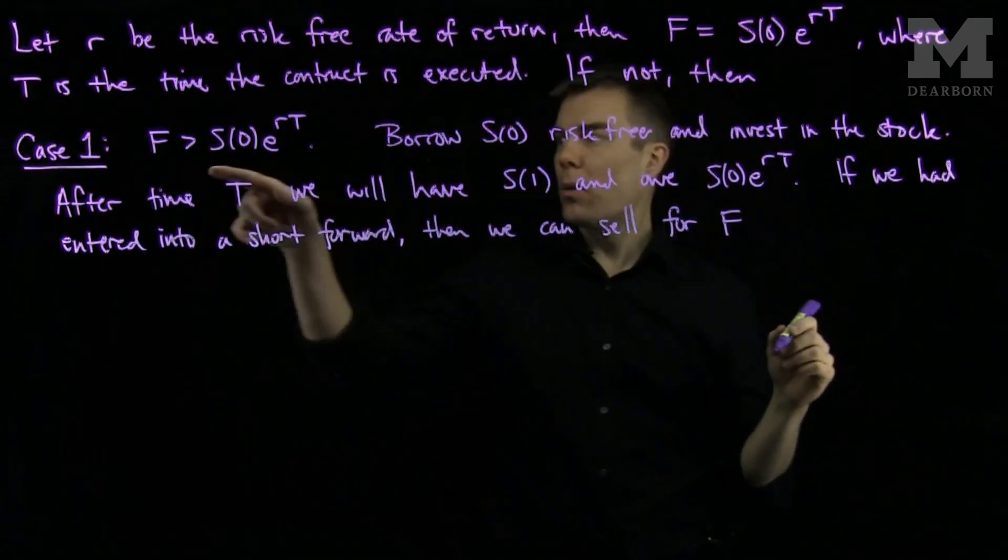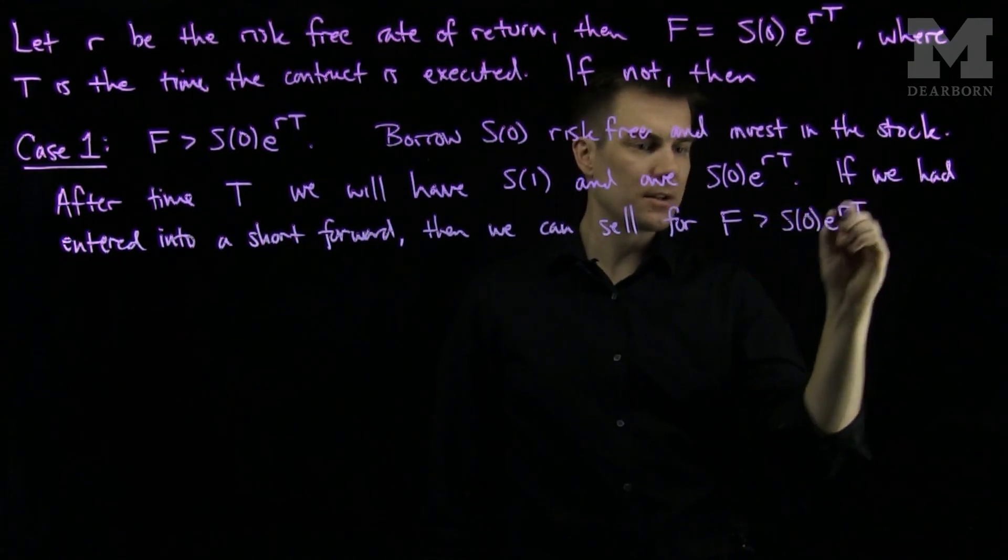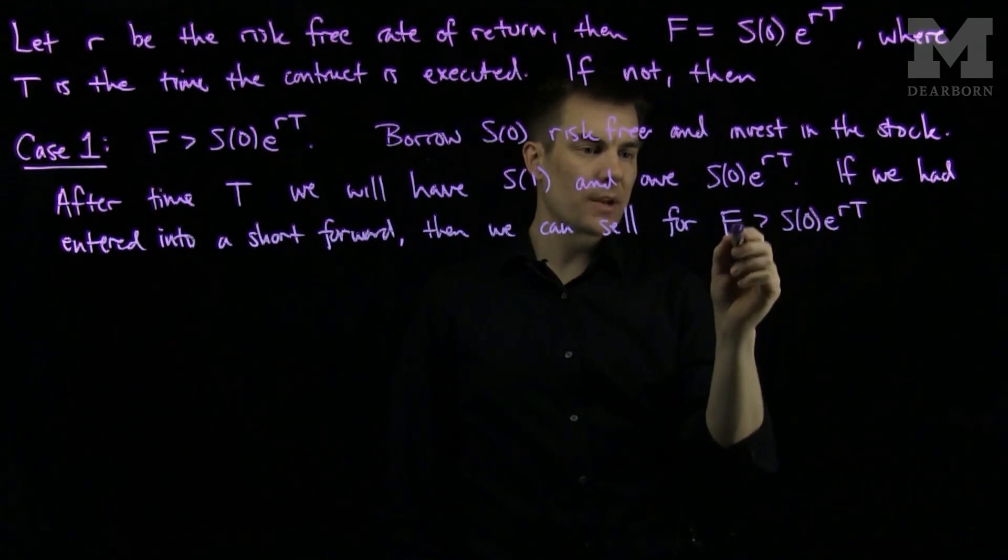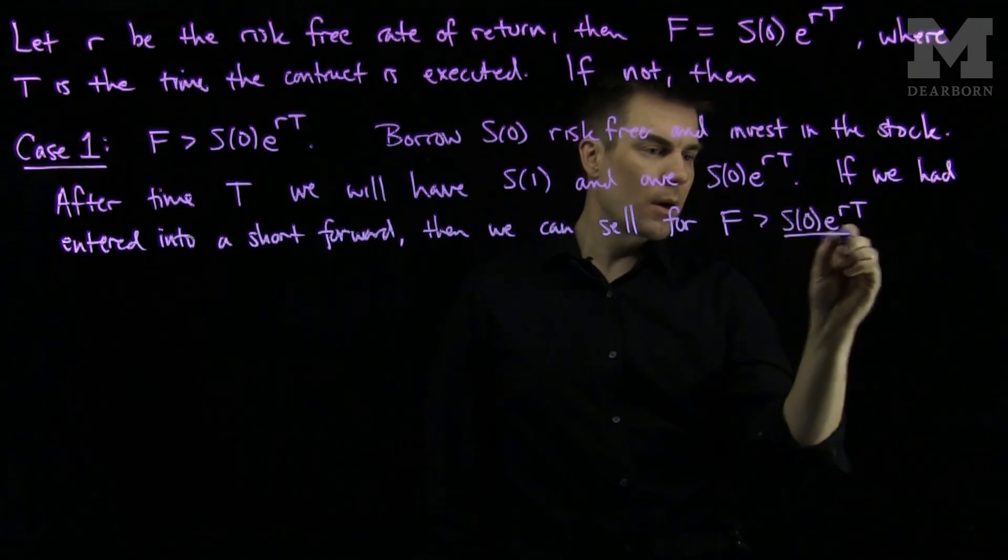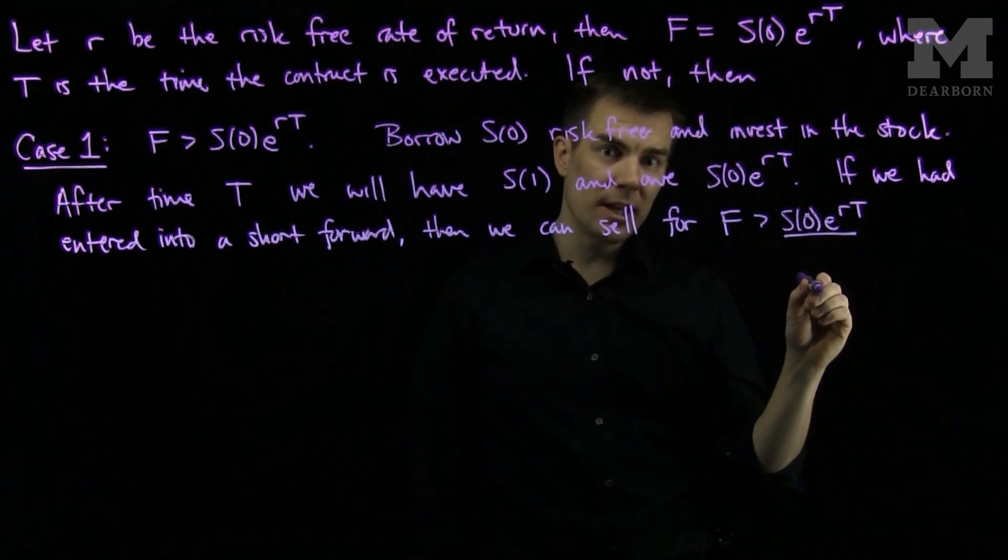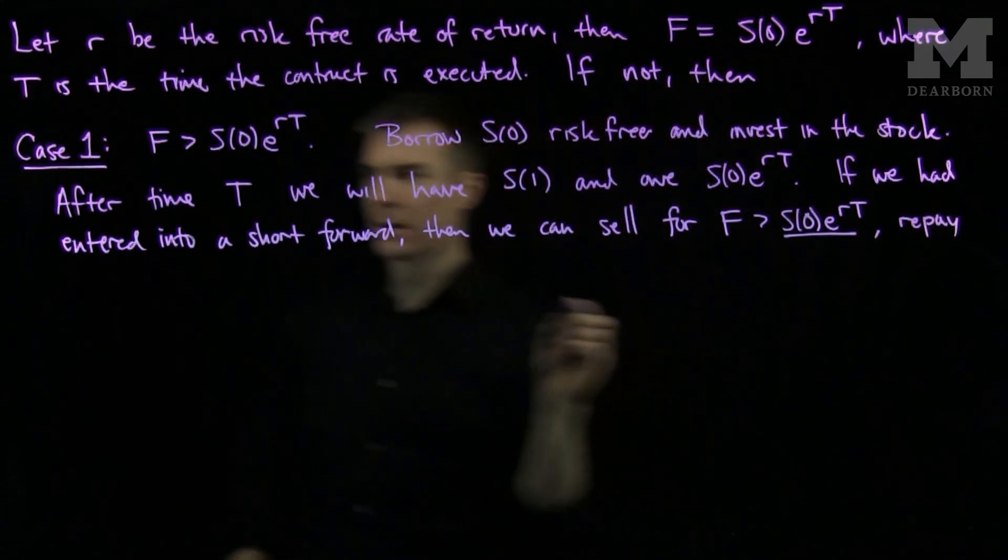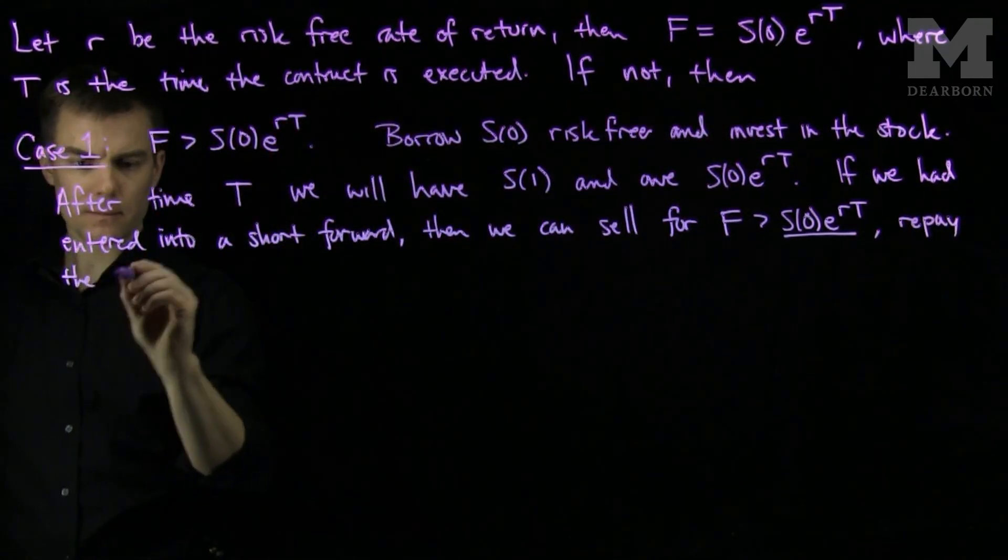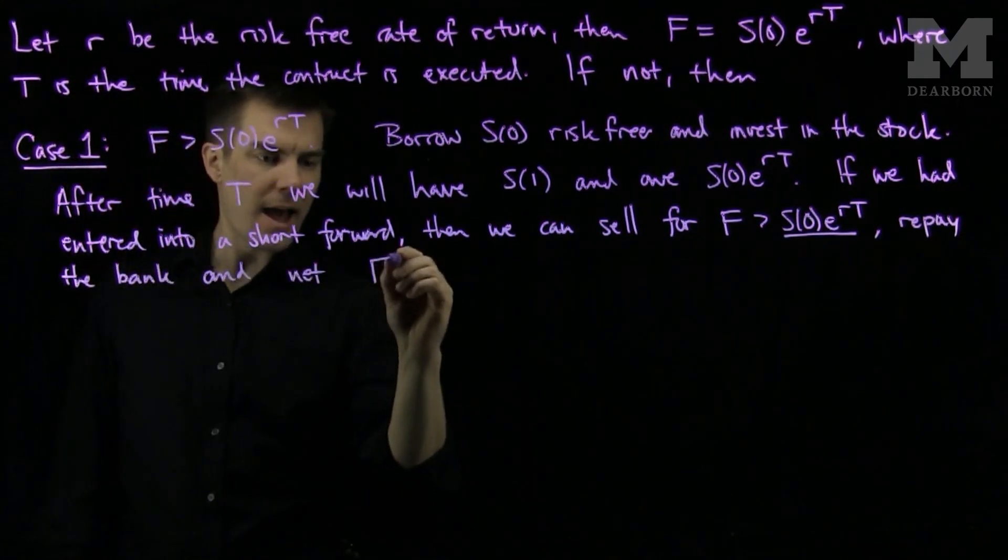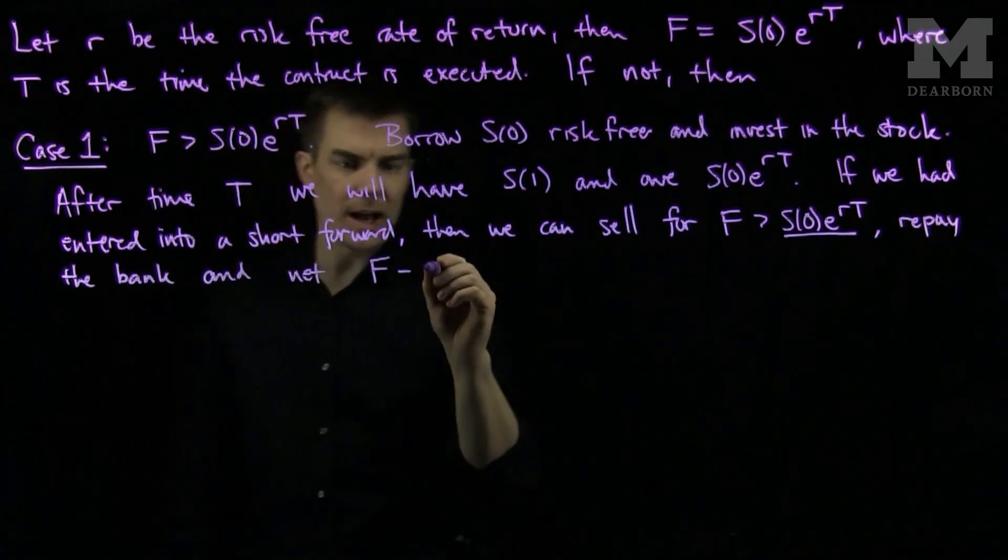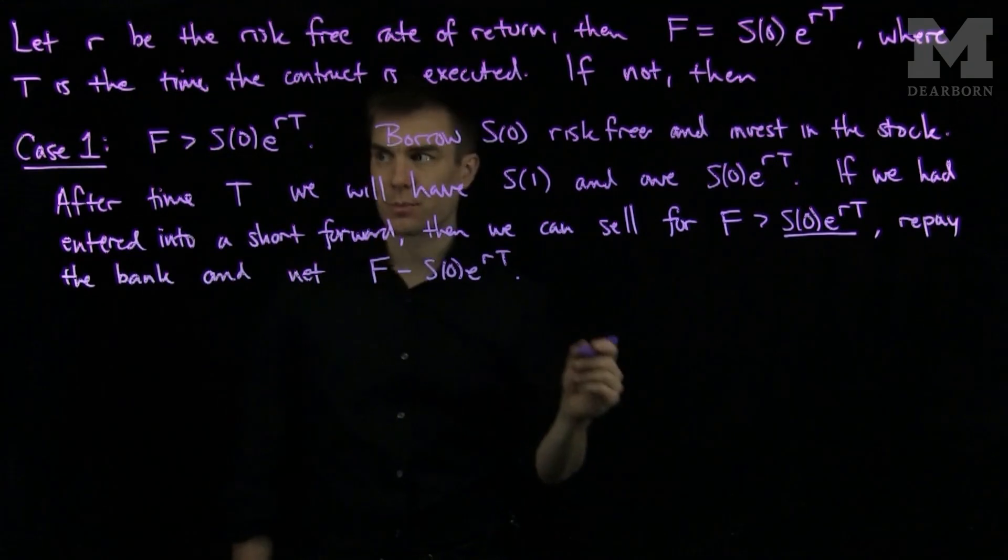And we know by assumption that F is larger than S0 times e to the RT, which means that when I sell my stock for F, I will have more than S0 times e to the RT to repay the bank. So I will repay the bank and net F minus S0 times e to the RT. And that's a violation of the arbitrage principle.